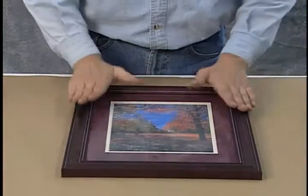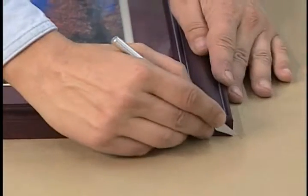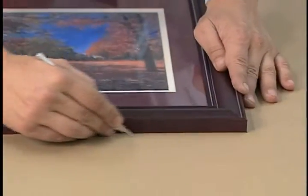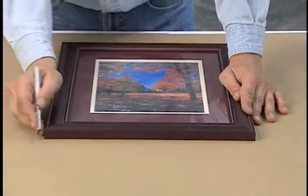Next, flip the frame over and set it on top of the backing paper. Use a sharp knife to roughly remove the excess paper. Be careful not to cut into the frame.